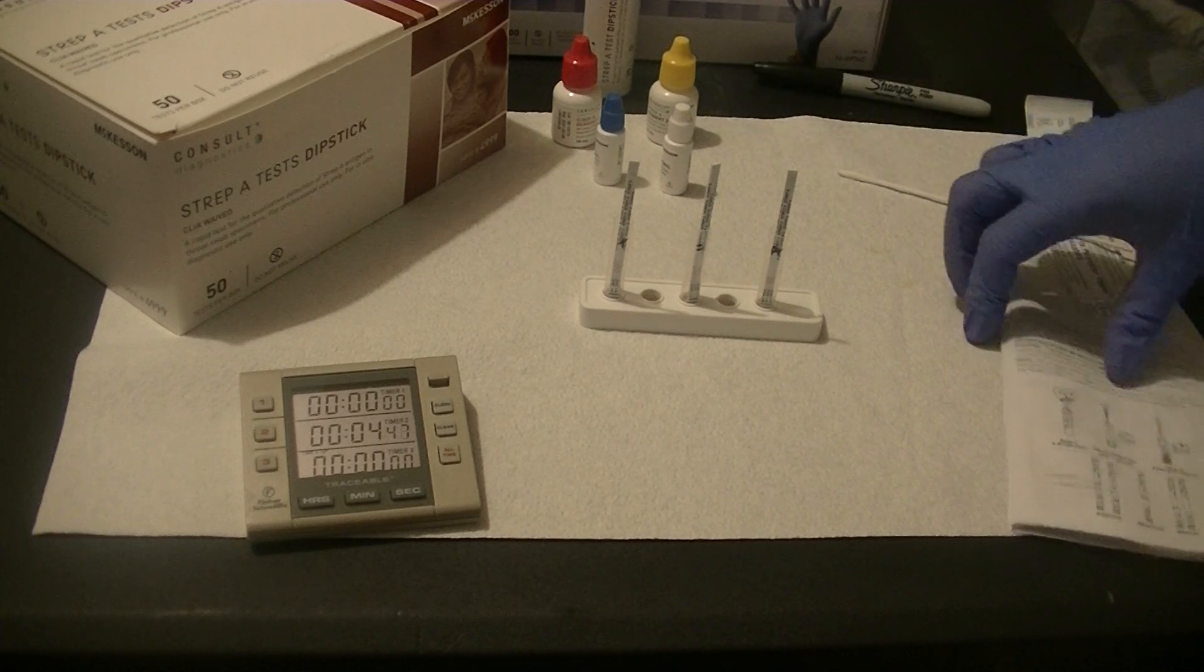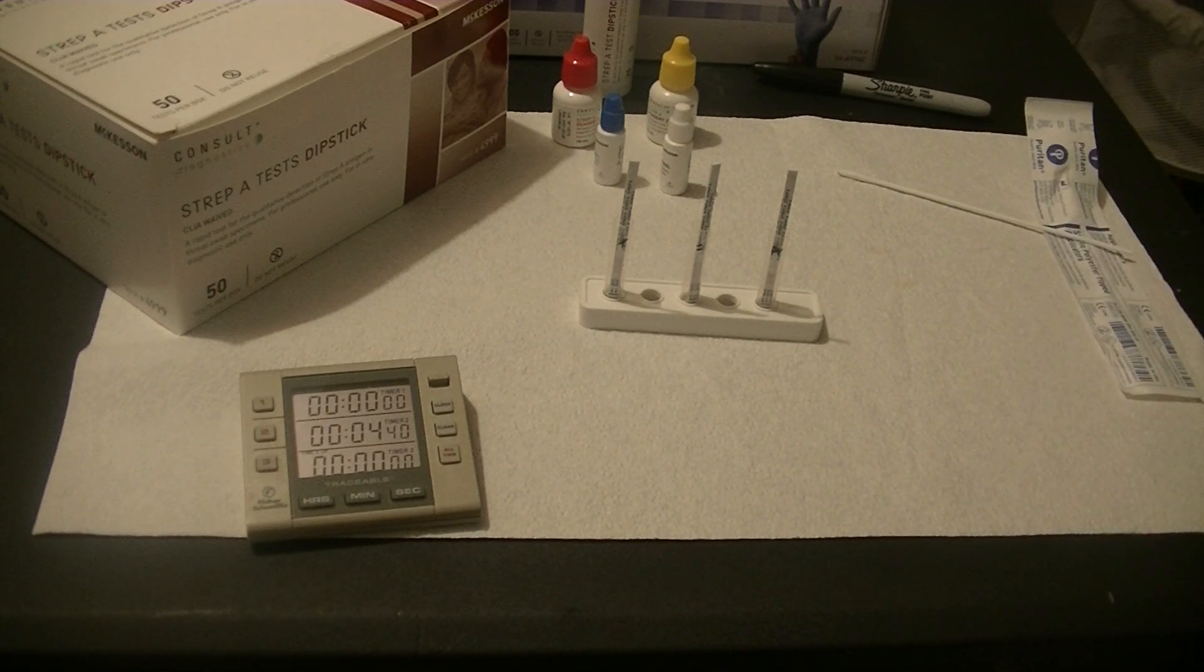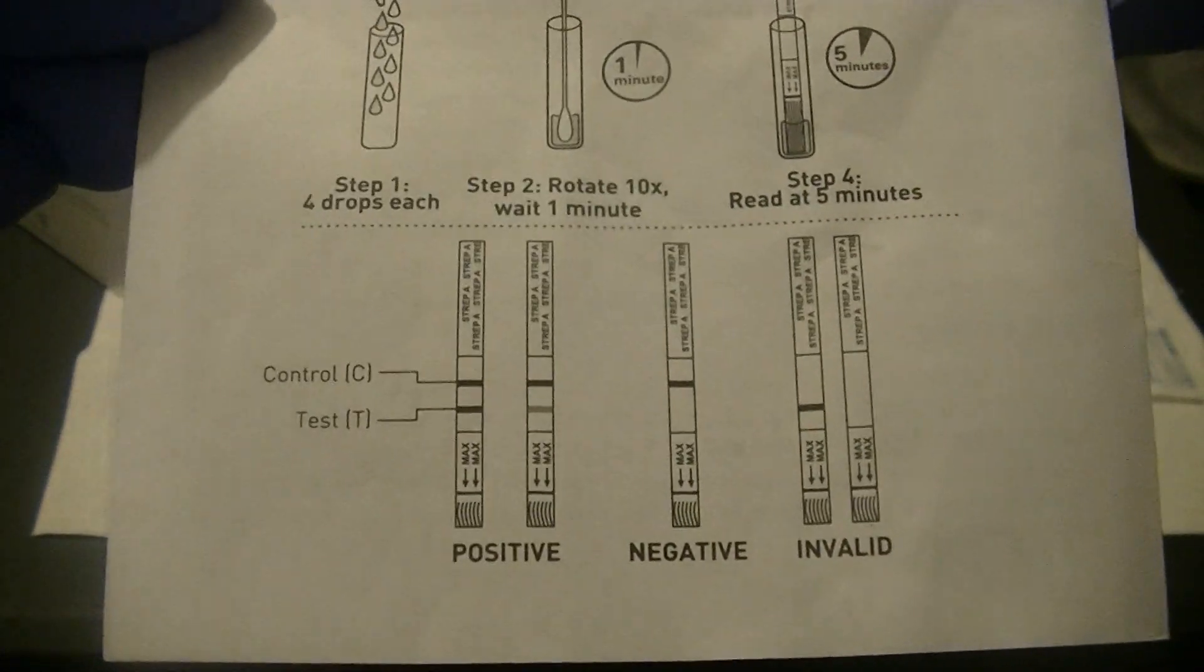We're going to see if we get a control line and a line in the test area. We're going to read it just like a pregnancy test. What I'm going to show you is the results that you're supposed to be seeing for each type of test.